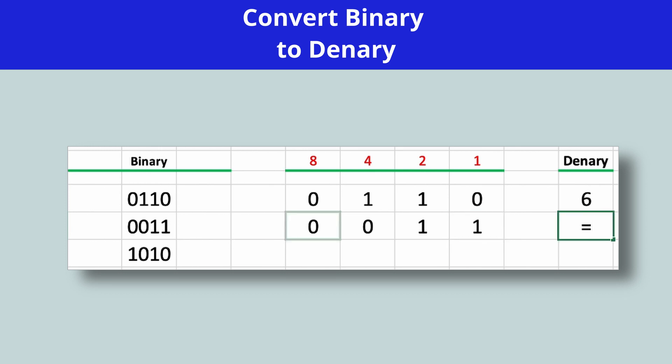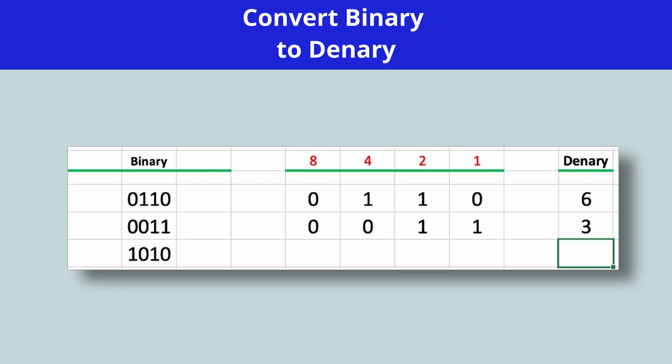Zero in the eights column, so I'm not going to do anything. Zero in the fours column, so I'm not going to do anything. One in the twos column, so I'm going to add the two. And then one in the ones column, so I'm going to add the one. So that now becomes three. So 0011 in binary is 3 in denary.